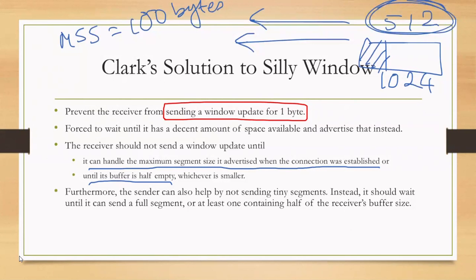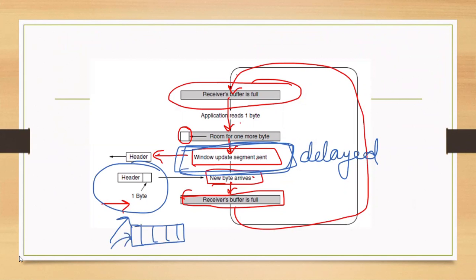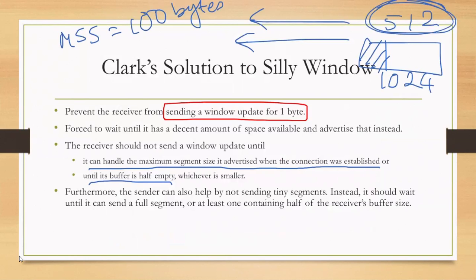The sender can also help by not sending tiny segments. Instead, it should wait until it can send a full segment or at least one containing half of the receiver buffer size. So both the sender must wait before sending small amounts of data, and the receiver must also wait before sending a window update until it has sufficient free space — both contributions together handle the silly window syndrome.